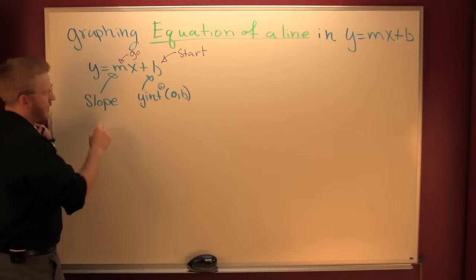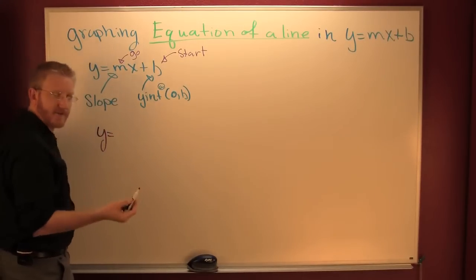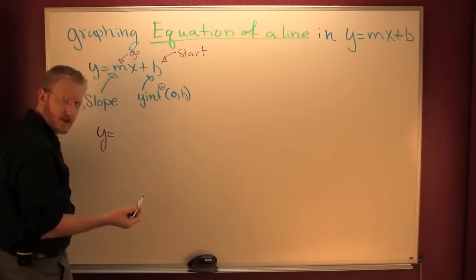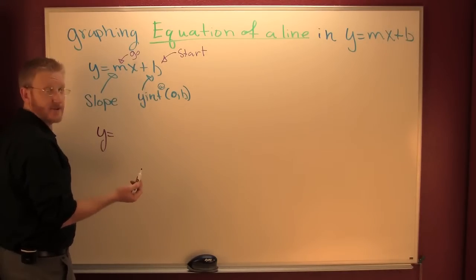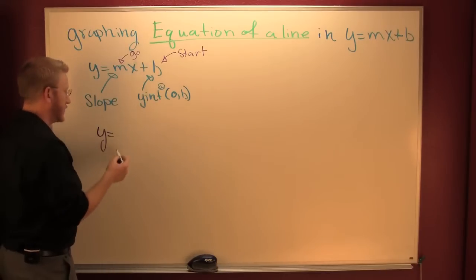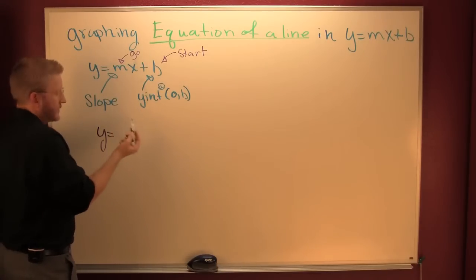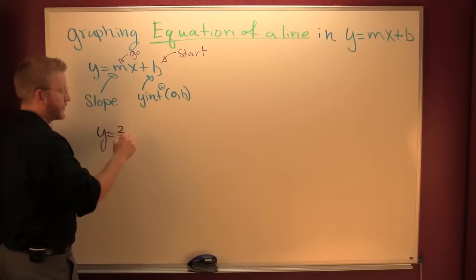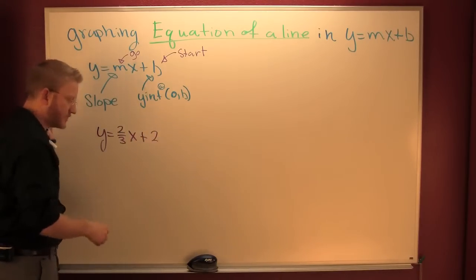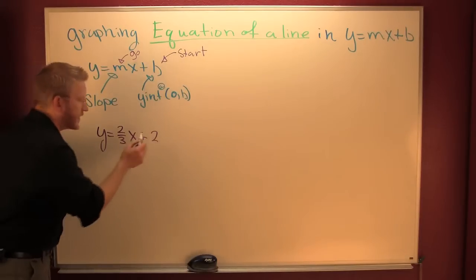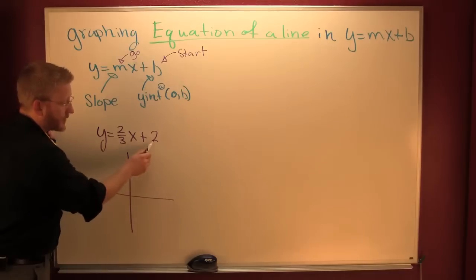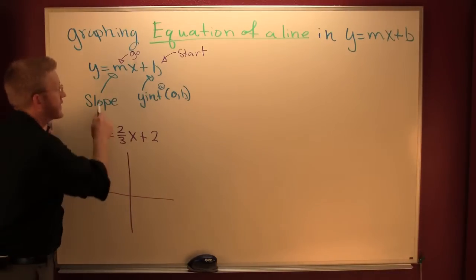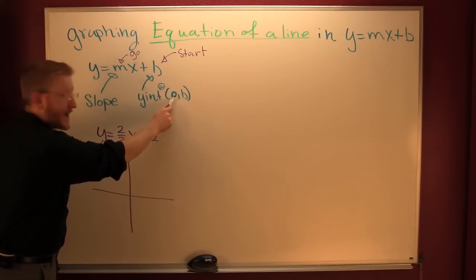Let's make a function in that form. Take the last two digits of your address or your telephone number. Maybe it's like y equals two-thirds x plus two. So what do you do? You're going to graph this thing. Where are you going to start? You're going to start at two — two on the y-axis.